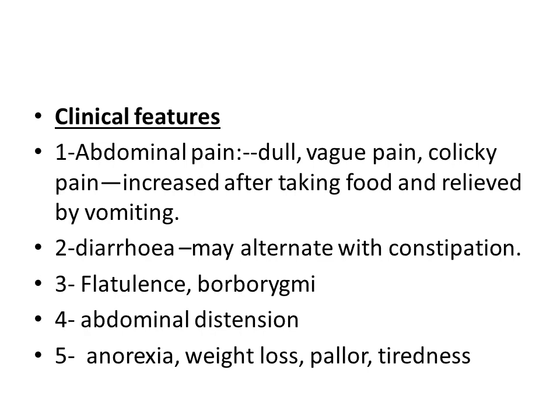Clinical features: Abdominal pain — dull, vague pain, sometimes colicky — which increases after taking food and is relieved by vomiting. Another manifestation is diarrhea, which can alternate with constipation. There may also be flatulence, borborygmi, audible bowel sounds, and abdominal distension. Non-specific symptoms include anorexia, loss of appetite, loss of weight, pallor, and tiredness.